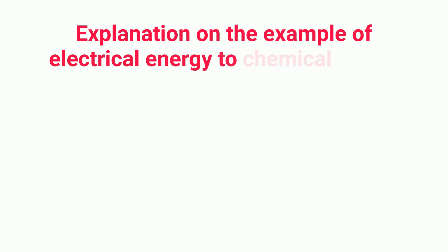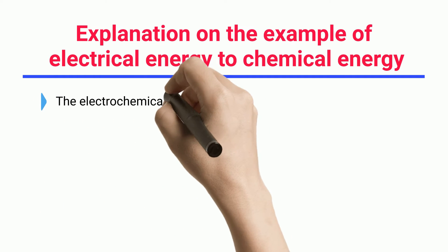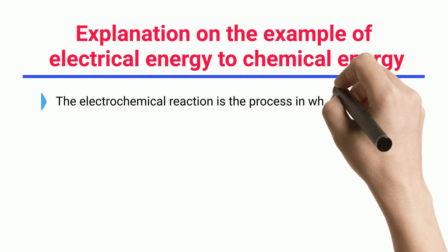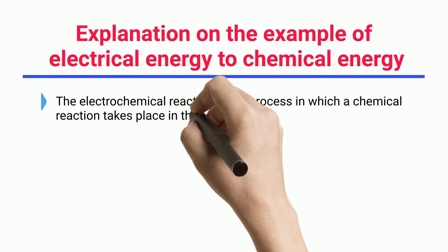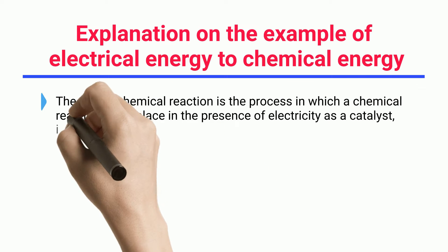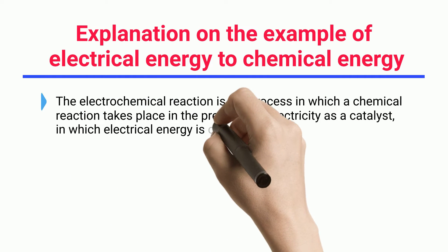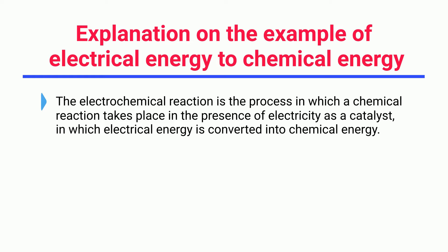Explanation on the example of electrical energy to chemical energy. The electrochemical reaction is the process in which a chemical reaction takes place in the presence of electricity as a catalyst, in which electrical energy is converted into chemical energy.